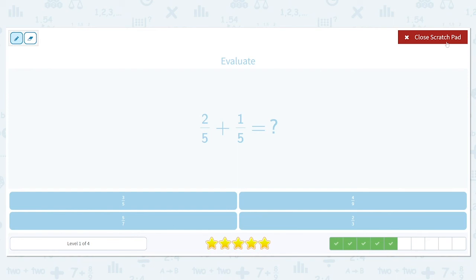Two fifths plus one fifth. Our denominators are the same, so we're going to add two plus one to get three fifths. And I see that that is one of our choices.